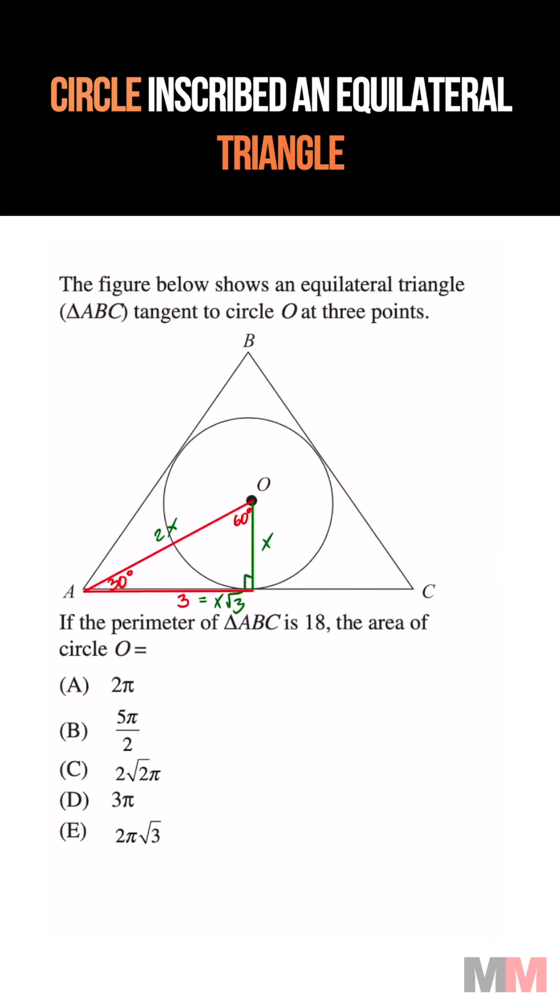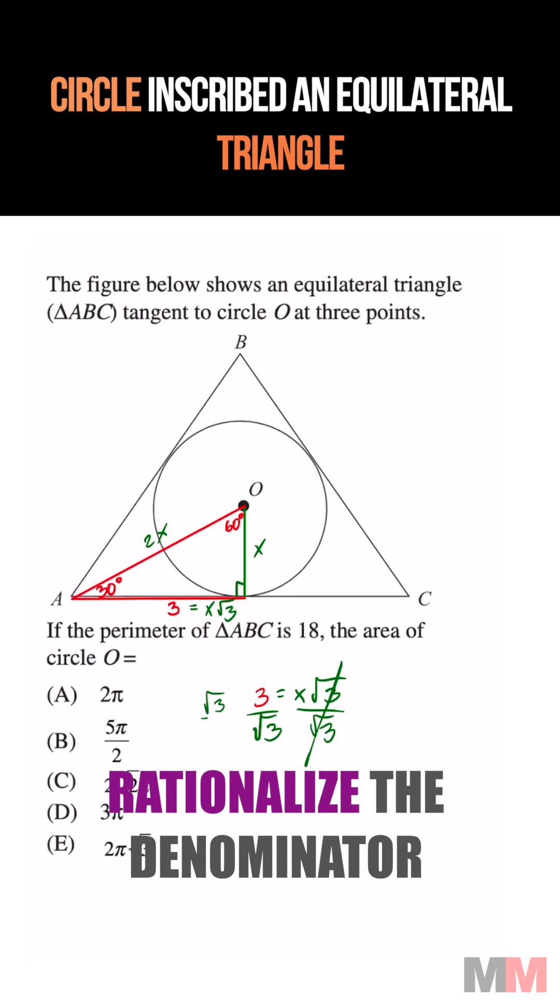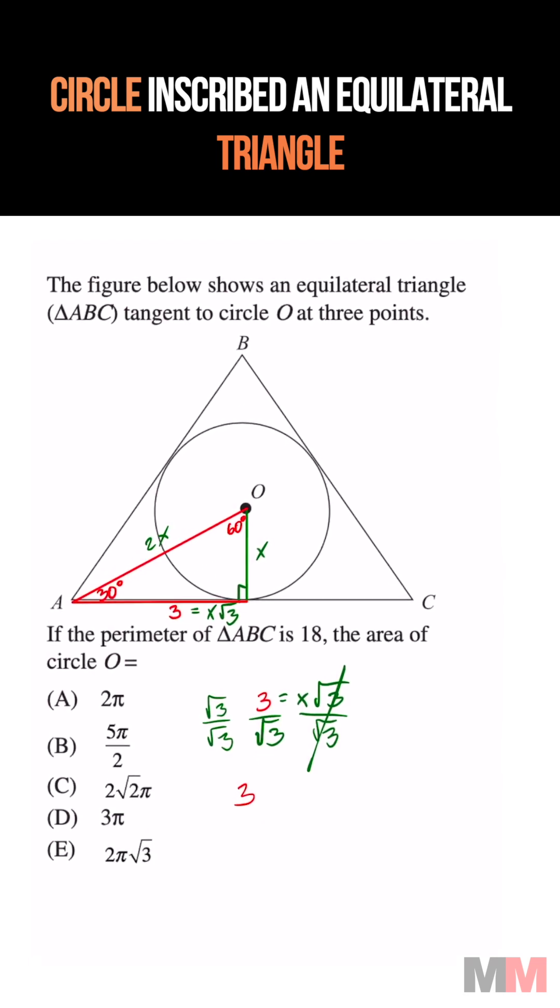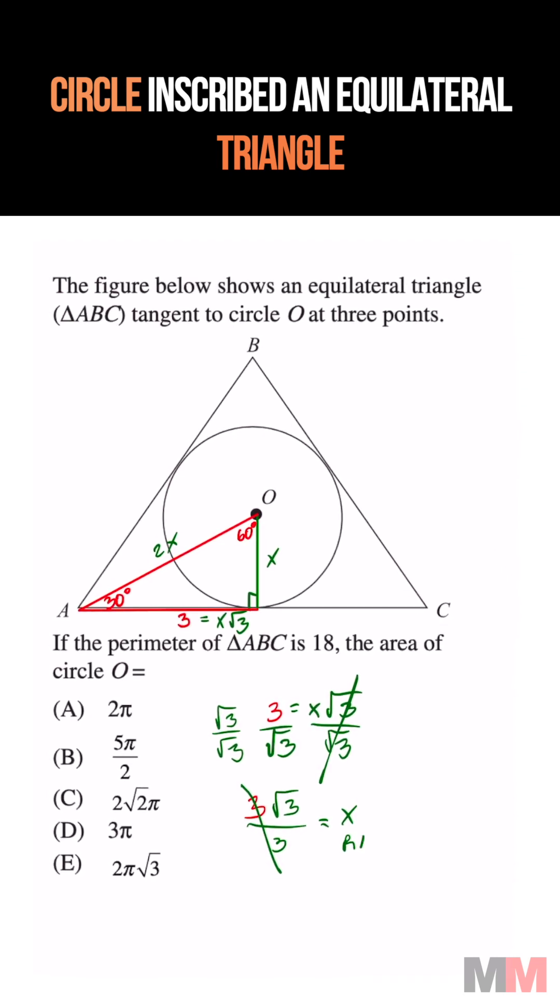Now we just got to solve for x. Divide both sides by the square root of 3, and then multiply this by root 3 over root 3. 3 root 3 over 3, which these cancel out, and that's going to equal x, which is my radius.